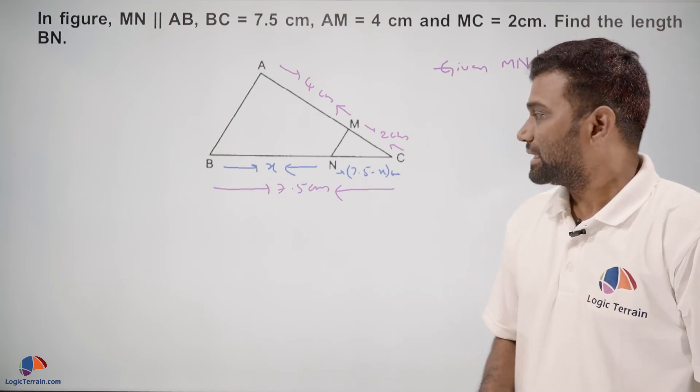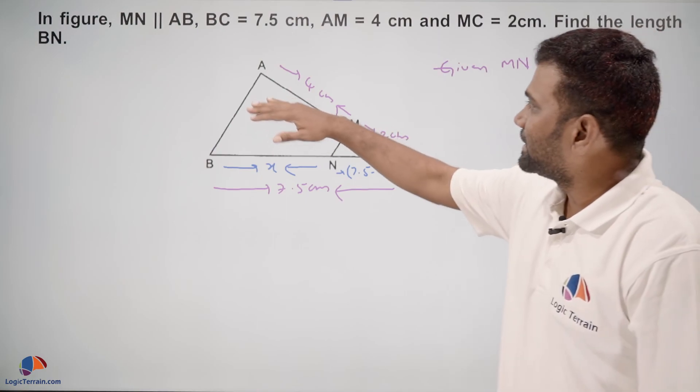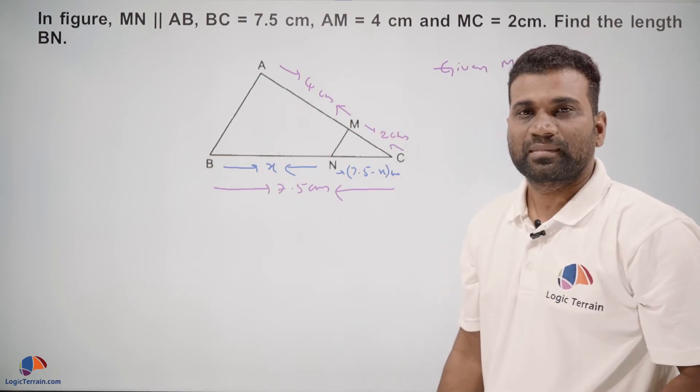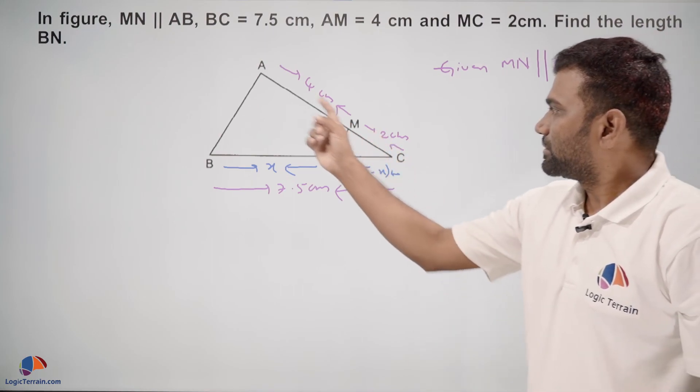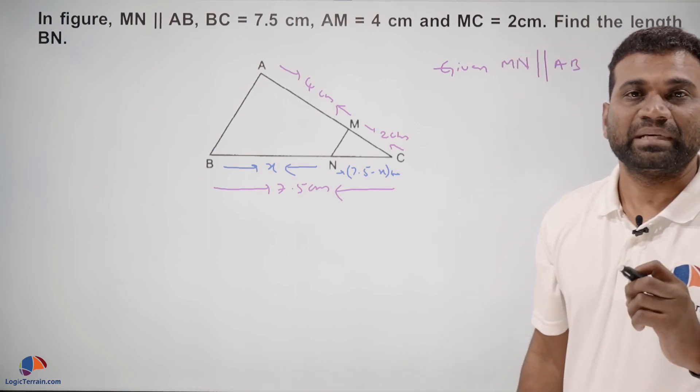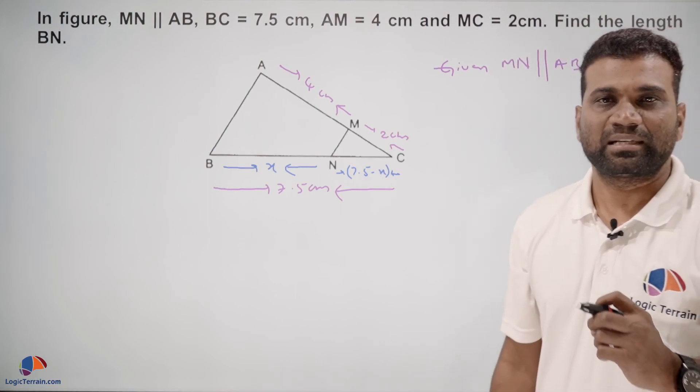Now we need to find BN. In this figure, MN is parallel to AB in this triangle. Since this line is parallel, we can use BPT, the Basic Proportionality Theorem.